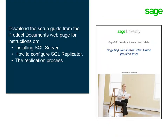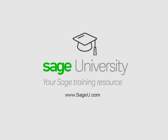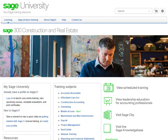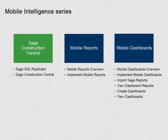Want to learn more about going mobile? Check out Sage University. On the Sage 300 Construction and Real Estate homepage, you'll find a collection of complimentary instructional videos on mobile access. The Mobile Intelligence series covers how to set up your Sage Construction Central website, and how to set up and use mobile reports and mobile dashboards.